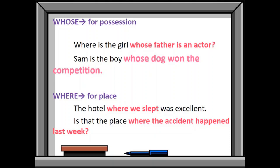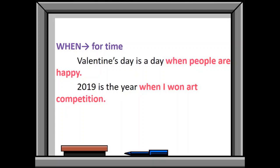Whose is used for possessions. Sam is the boy whose dog won the competition. Here, Sam's possession is dog. We are talking about that dog. We are talking about his possession. That's why we used whose. Where is used for place. The hotel where we slept was excellent. When we are talking about a specific place, we will be using relative pronoun where.